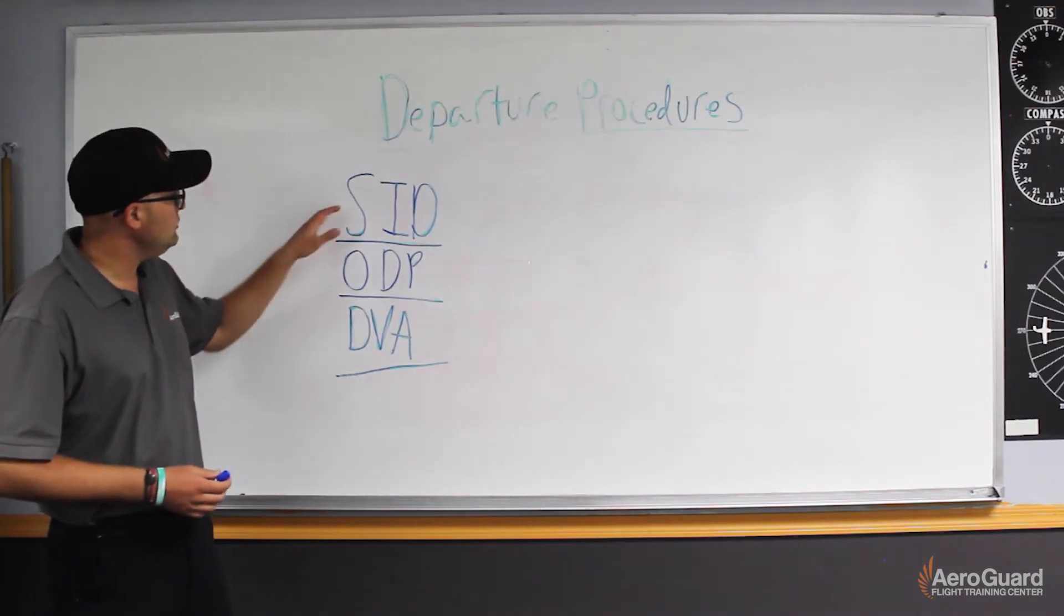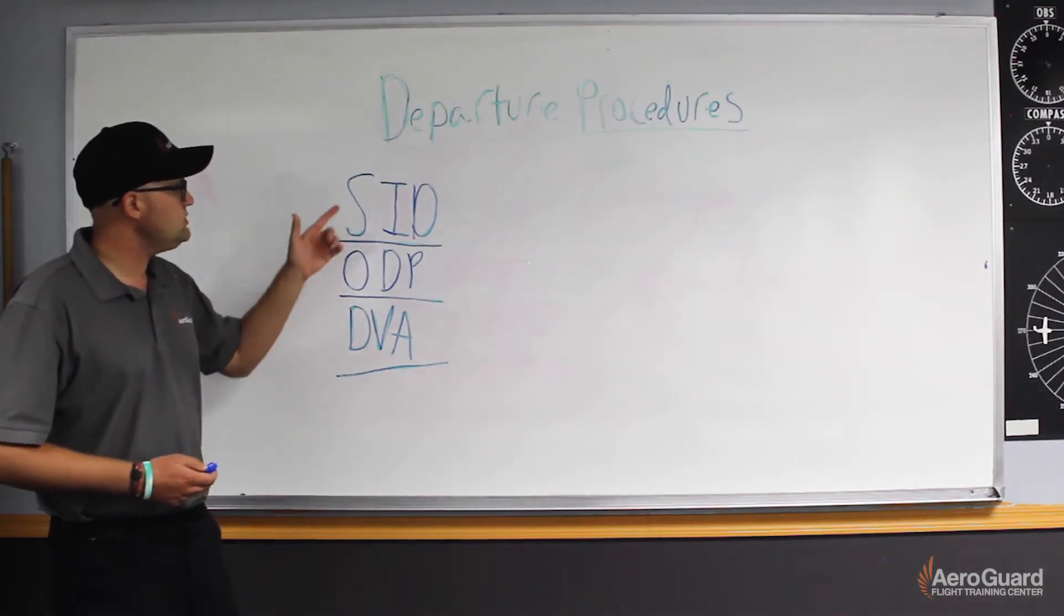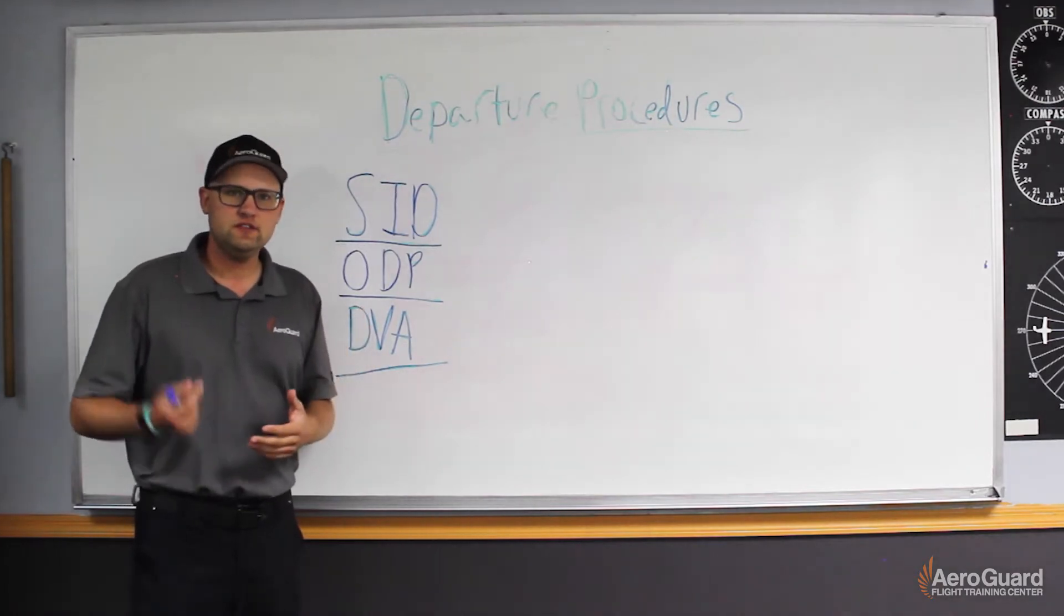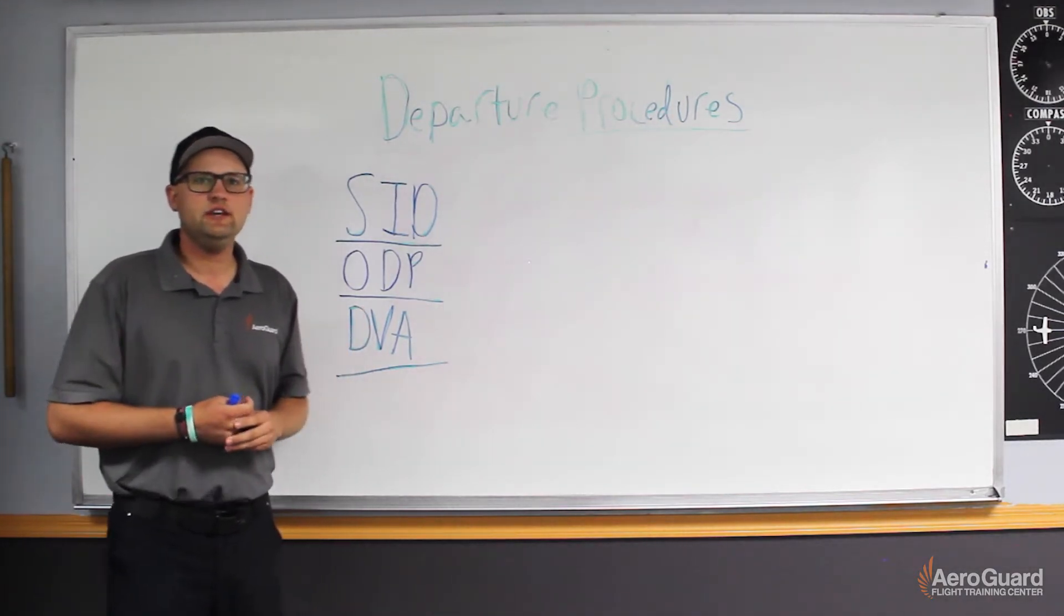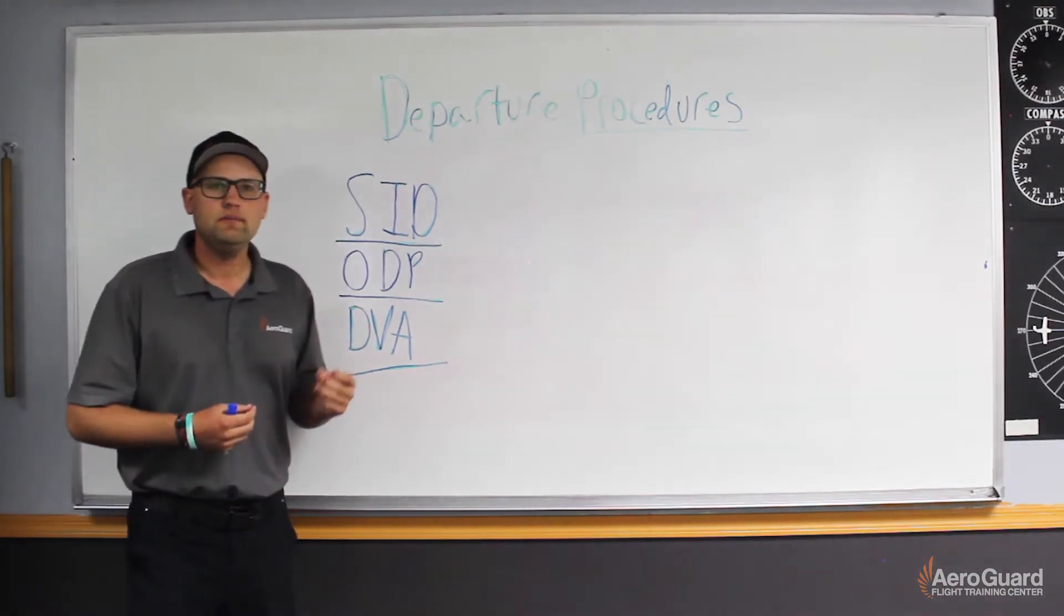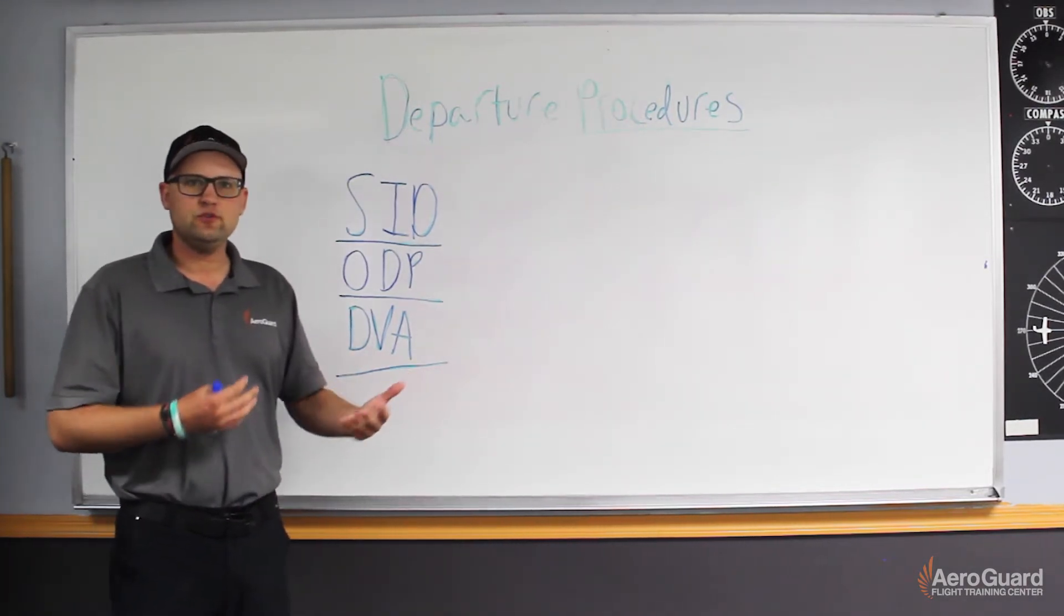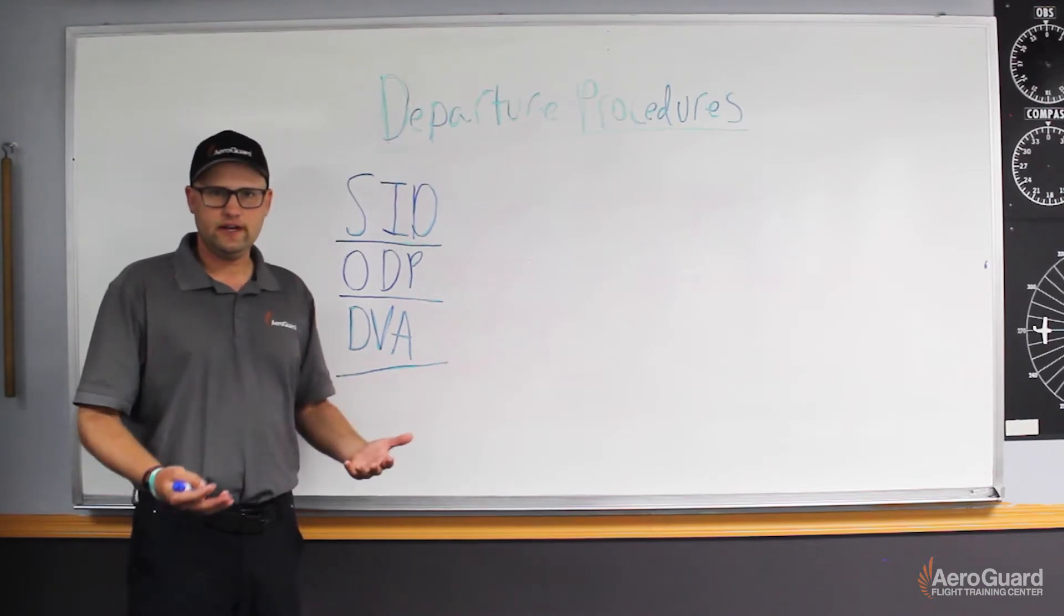The first one we'll talk about is the SIDs, Standard Instrument Departure Procedures. SIDs are designed to get your airplane to the en route phase of the flight safely and also reduce pilot and ATC workloads. Now you can either accept or reject a SID whether or not you want to fly it.